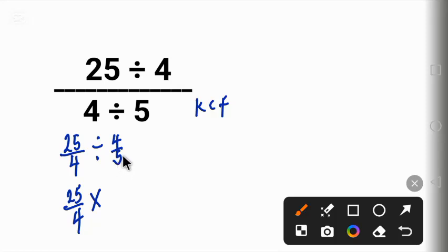Or invert: this 5 goes up and the 4 comes down, 5 over 4. Now 25 times 5 will give us 125.